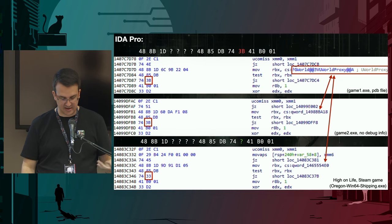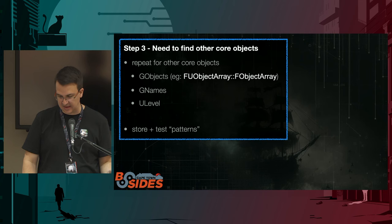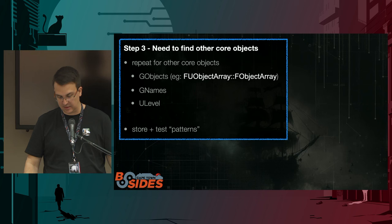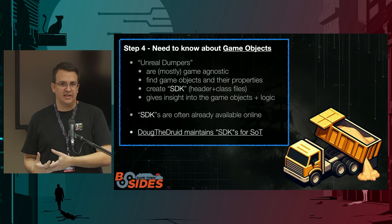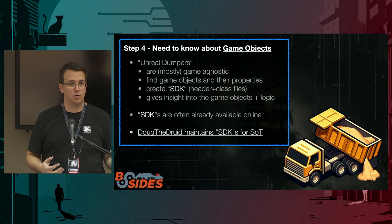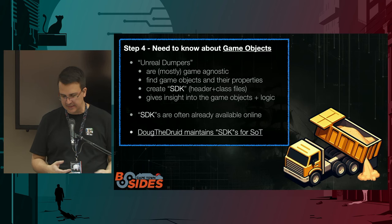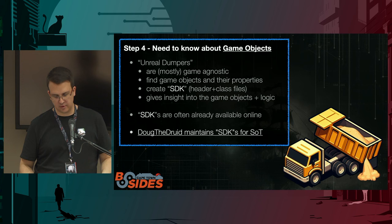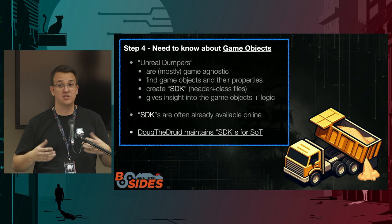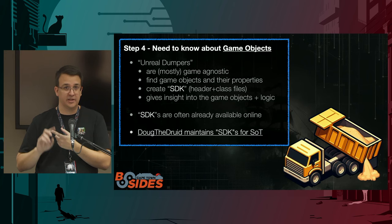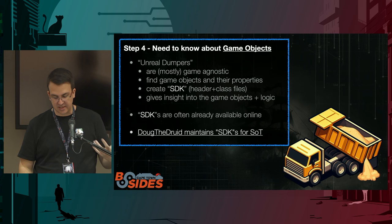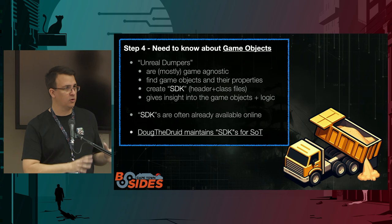We need to do this for a bunch of other offsets too — the F-object array to get objects, GNames, levels, and things like that. Assuming we can get all the data out of an Unreal Engine, we still need to know what's actually in the game — what they call their objects, what types exist like weapons and ammo packs, what properties they have. That's really hard to reverse engineer manually. So people have made Unreal dumpers, which are generally game-agnostic. They tend to output an SDK — a bunch of class files often meant for C, C++, or C# — so you get the literal names of things, the properties, and the data sizes. Doug the Druid maintains one for Sea of Thieves, so if you want to create your own Sea of Thieves hack, he makes all the data available.